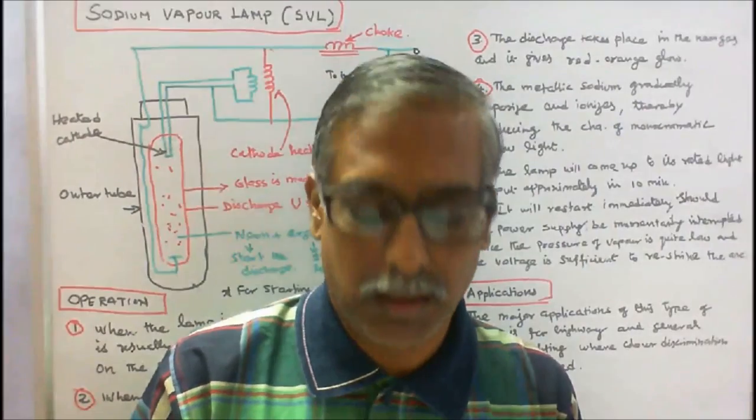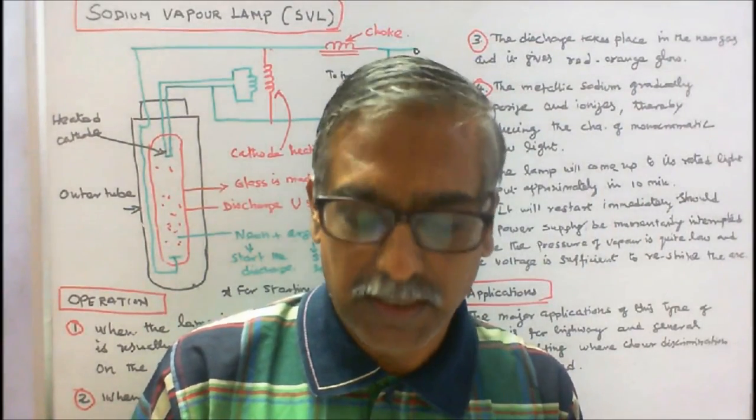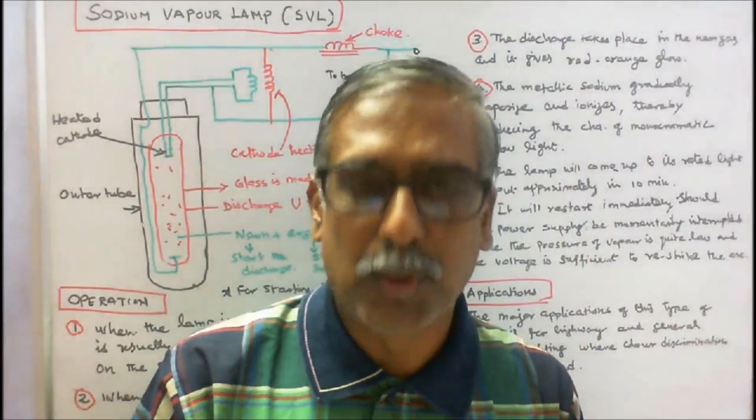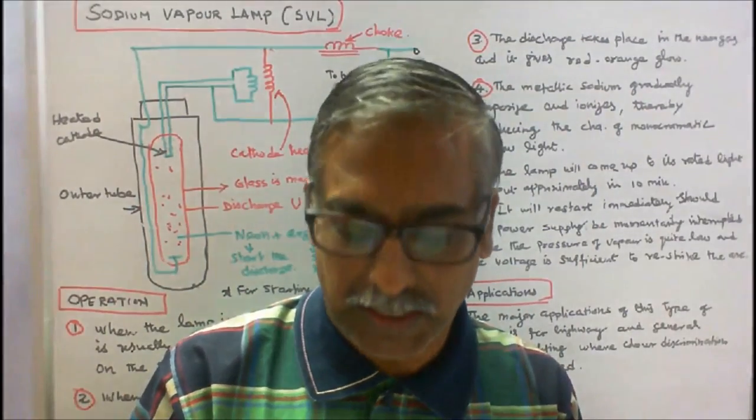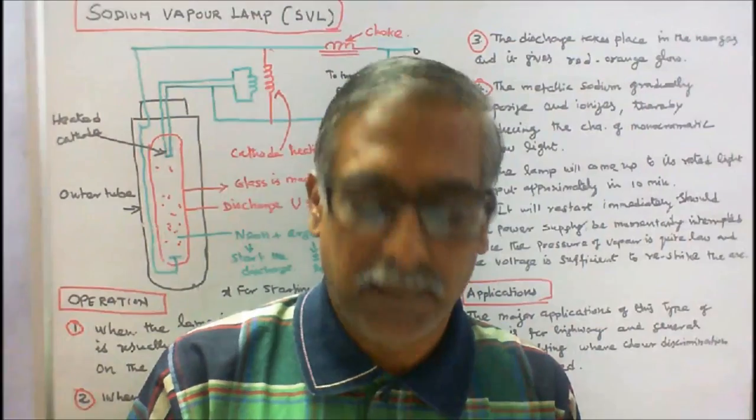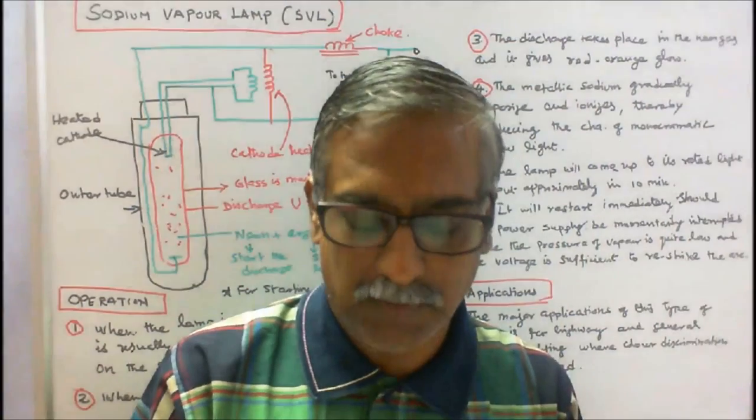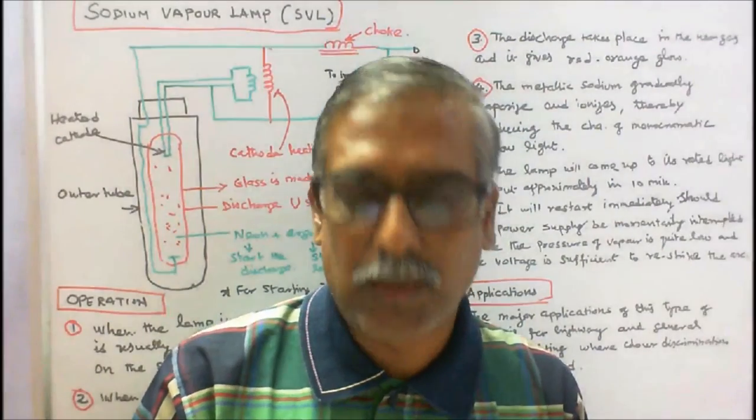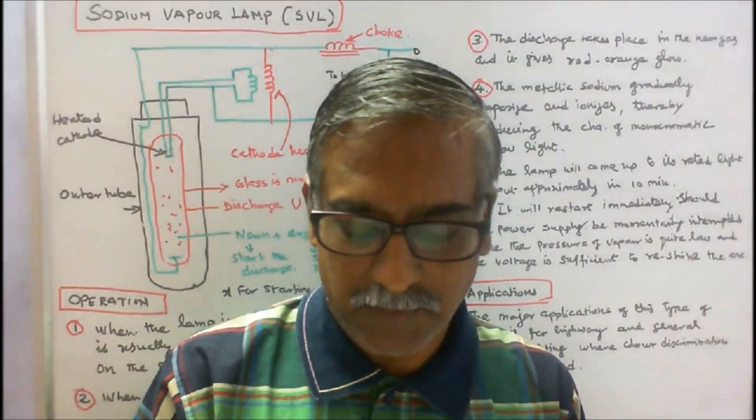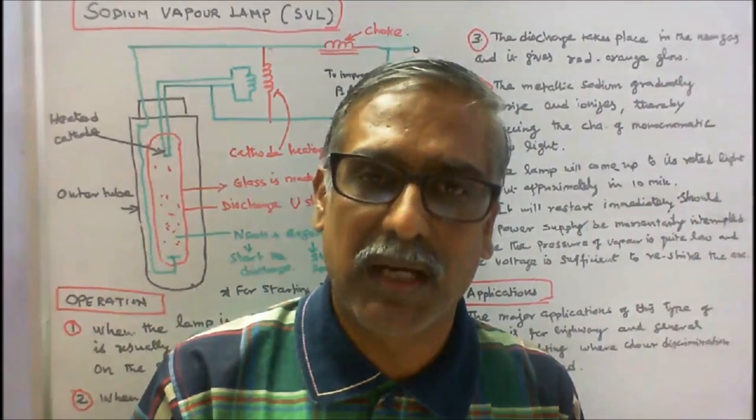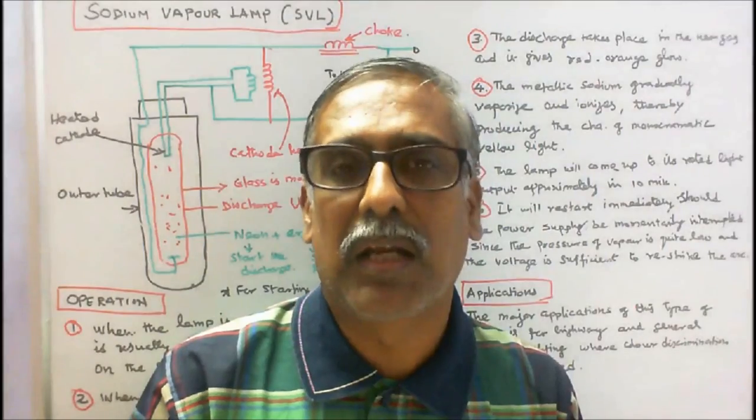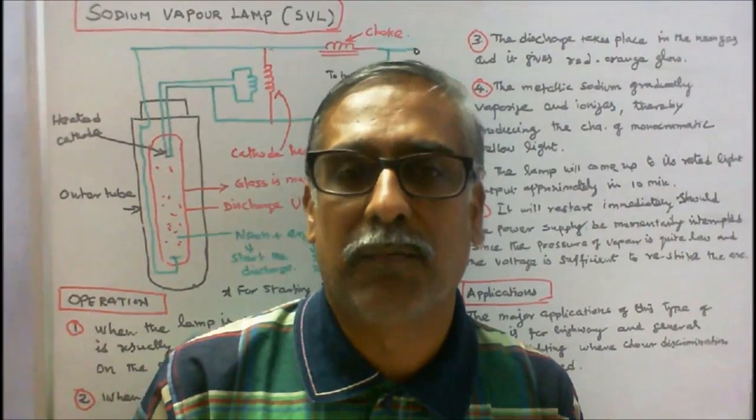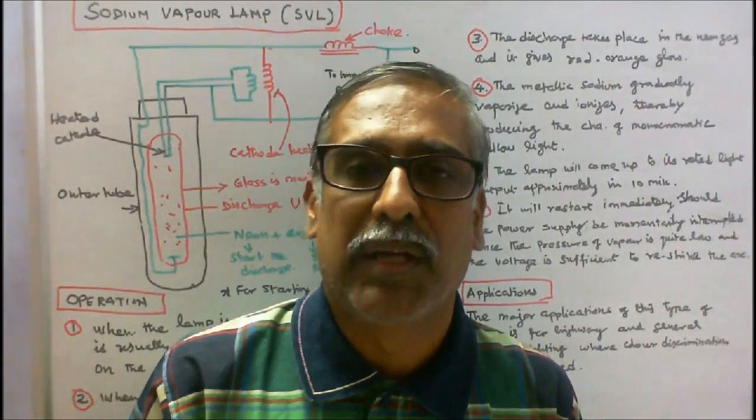Disadvantages are: Number one, these lamps have poor color rendering characteristics. Number two, it provides monochromatic light. Number three, very expensive to install. Number four, for attaining full brightness it requires seven to ten minutes. Number five, requires special disposal considerations. These are all the advantages and disadvantages of low pressure sodium vapor lamp.